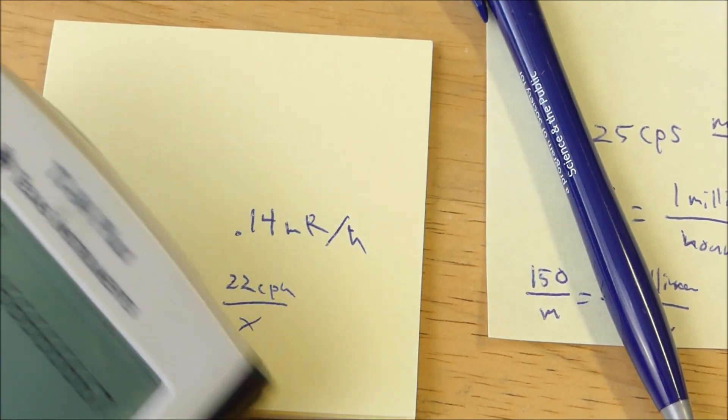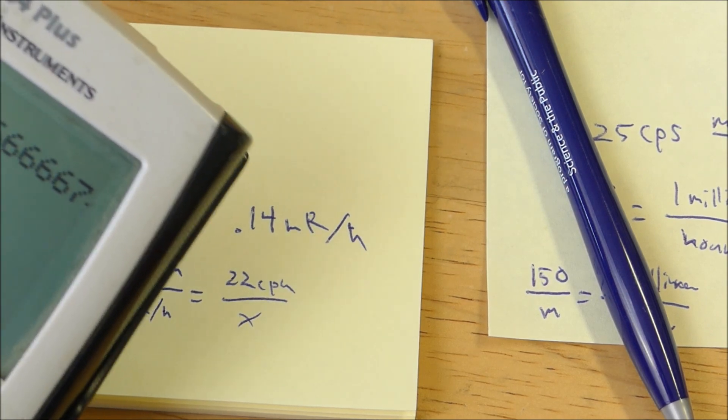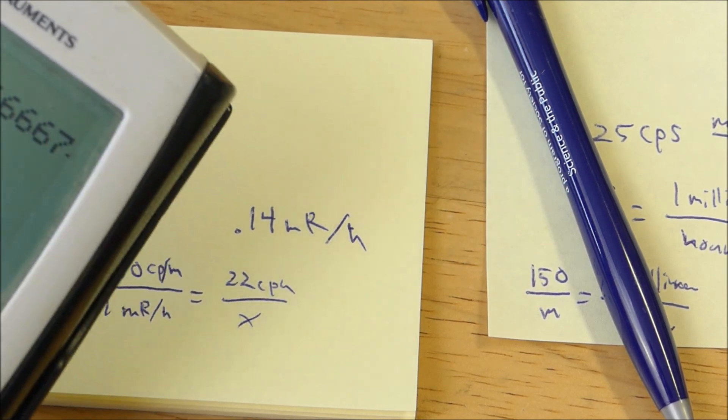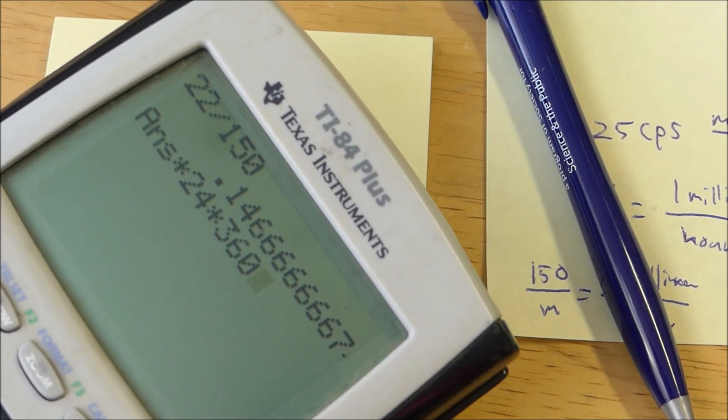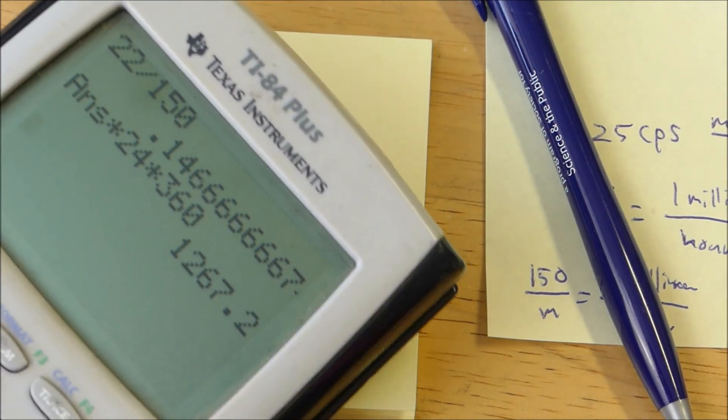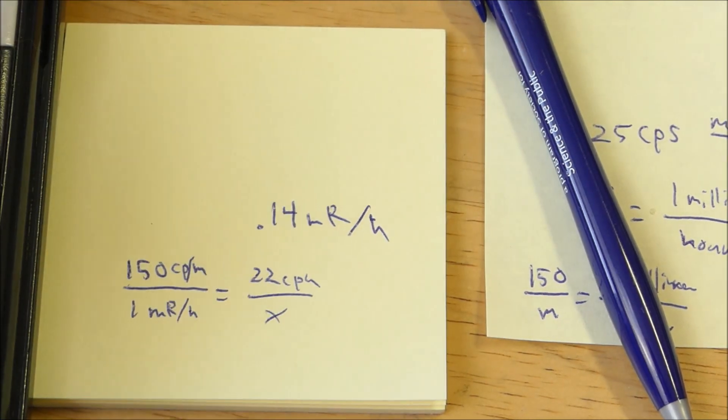So let's see if we can calculate how many millirems I'm going to have per year. So let's see. That's 0.14 times 24 times 360. 1,267 millirems per year. I wonder what the safety limit is.